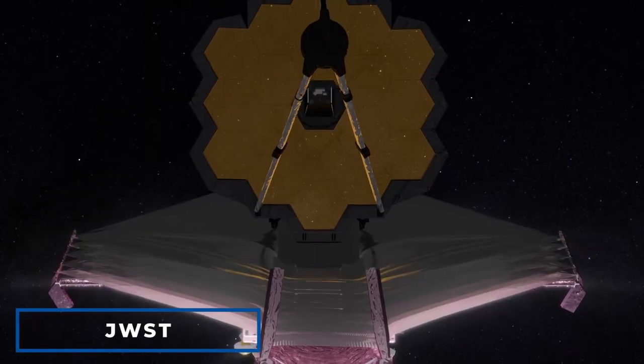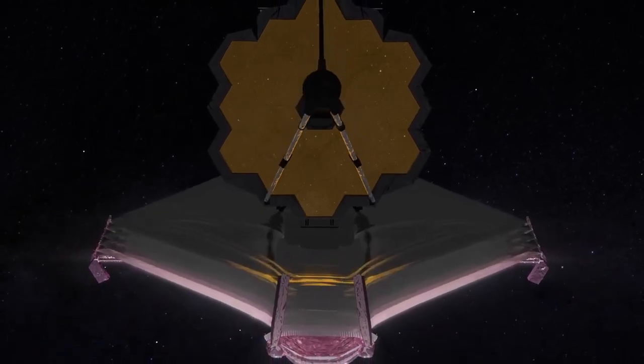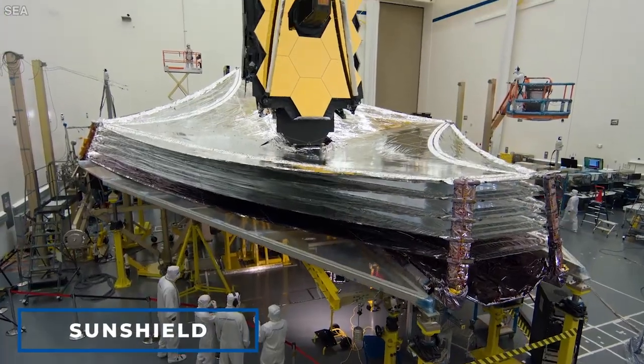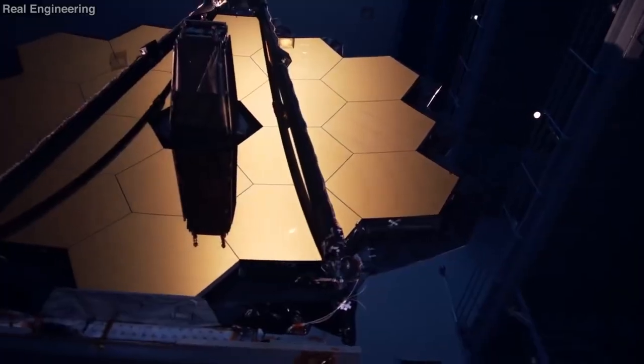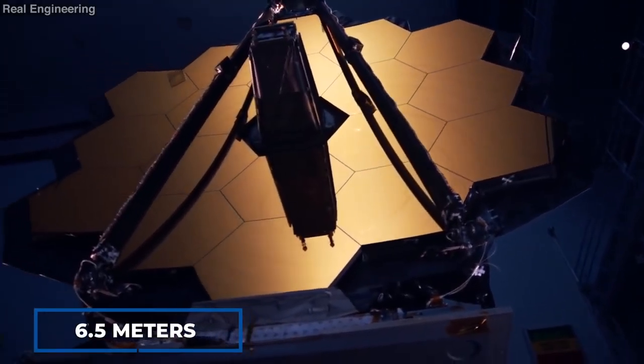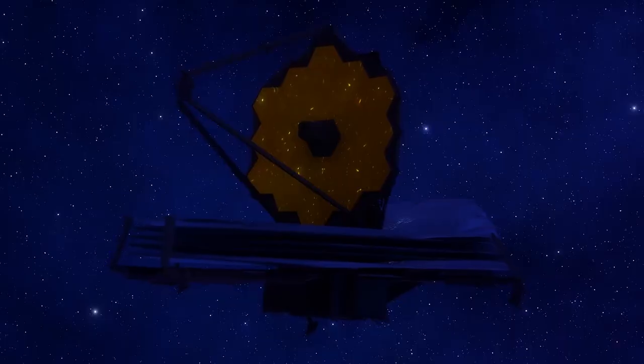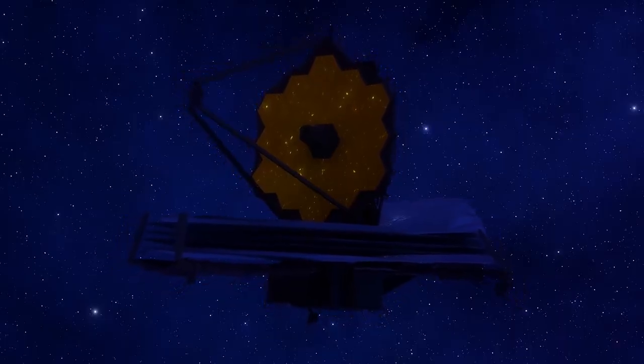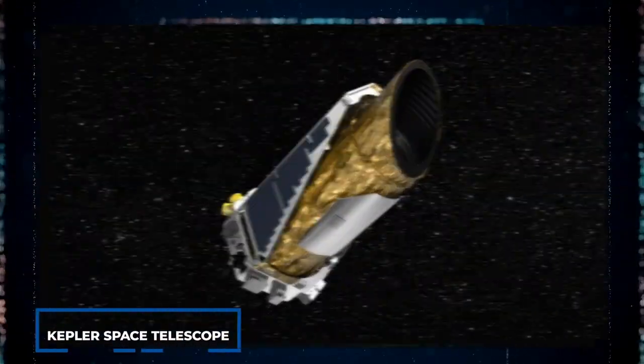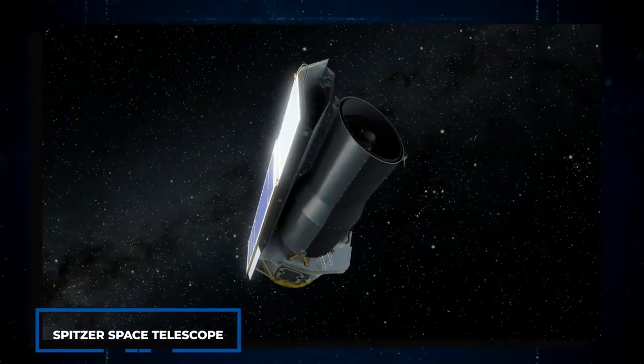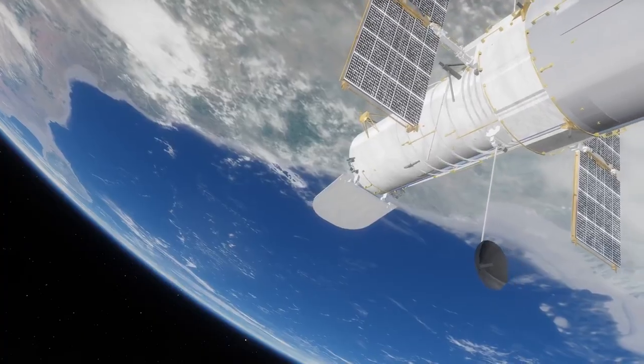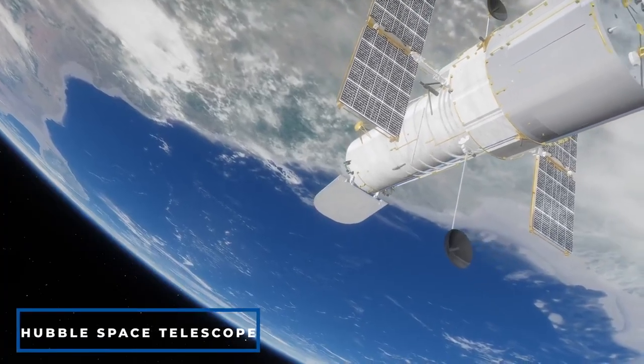The James Webb Telescope is leading the way into a fresh chapter of space observation with its remarkable sunshield spanning the size of a tennis court and its primary mirror of 6.5 meters packed within the launcher like a ship inside a bottle. The James Webb Space Telescope has taken over from previous missions such as the Kepler Space Telescope, the Spitzer Space Telescope, and of course, the incredible Hubble Space Telescope.